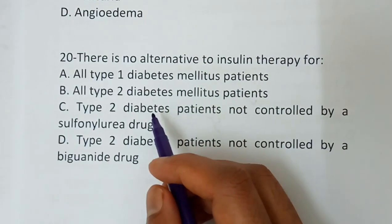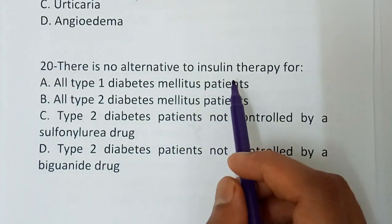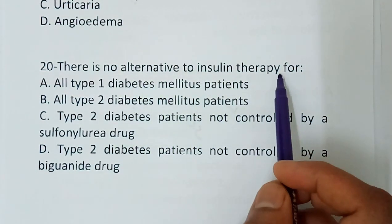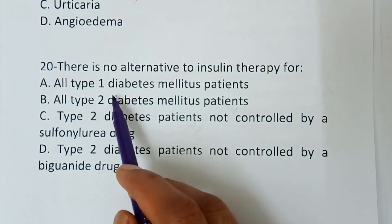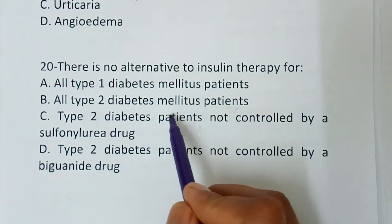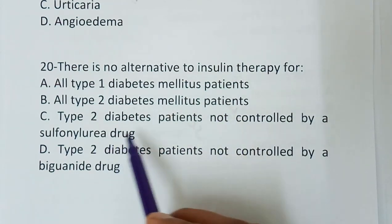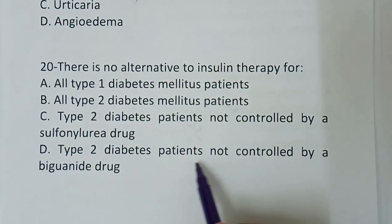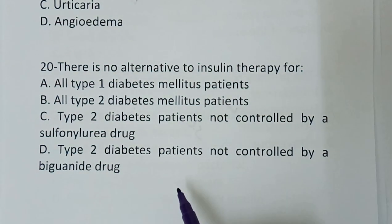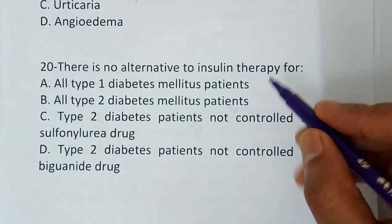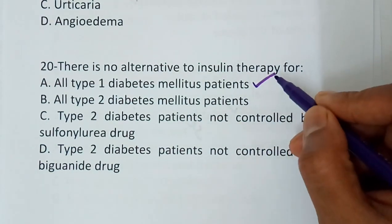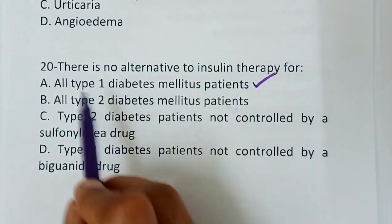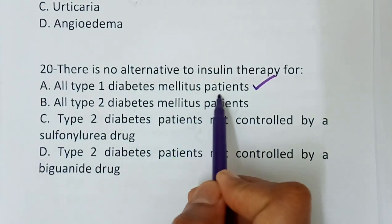Question number 20 — there is no alternative to insulin therapy for: option A, all type 1 diabetes mellitus patients; option B, all type 2 diabetes mellitus patients; option C, type 2 diabetes patients not controlled by a sulfonylurea drug; option D, type 2 diabetes patients not controlled by a biguanide drug. The correct answer is option A — all type 1 diabetes mellitus patients.